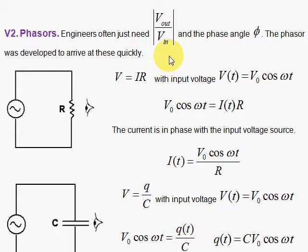What we did with Green's functions and convolution was get the ratio of the output amplitude to the input amplitude. I'm going to show you in a series of videos that you can get that result without Green's functions, without convolution, but using phasors.